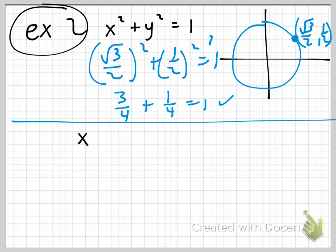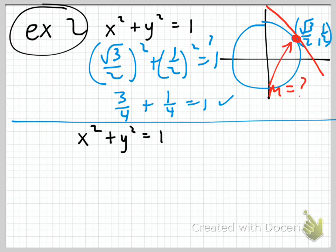I confirmed that this point is on the curve, and what we're looking for is the slope at that point. To find the slope, we have to find the derivative. Back to x squared plus y squared equals 1. We could solve for y here, but we'd get a positive and negative square root. It's much more convenient to find the derivative implicitly. The process: take the derivative of both sides with respect to x.